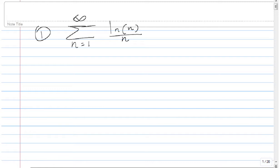For n greater than e which is 2.7, so n has to be greater than 3, then we have ln of n is greater than 1. So 1 over n will be less than ln of n over n.